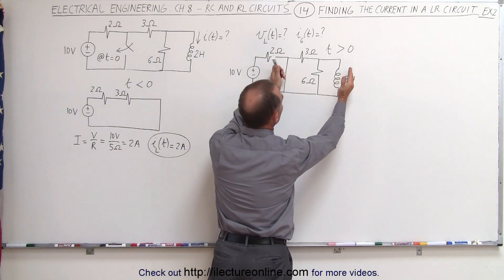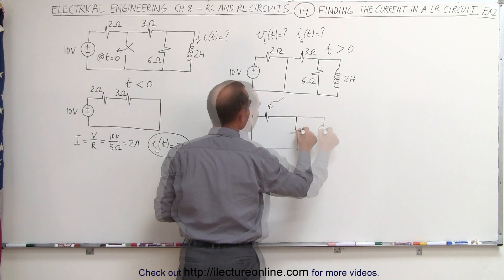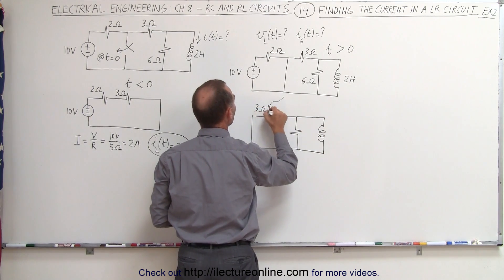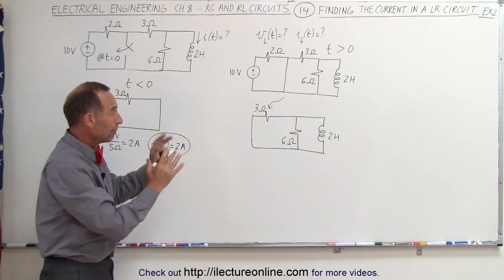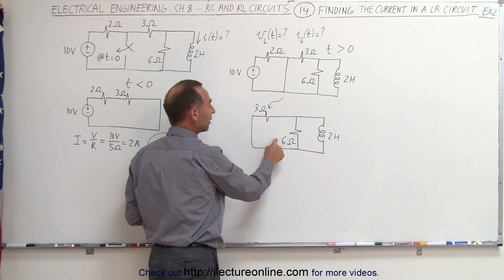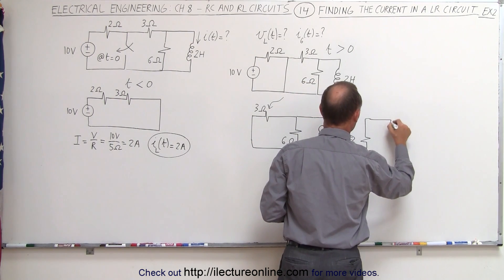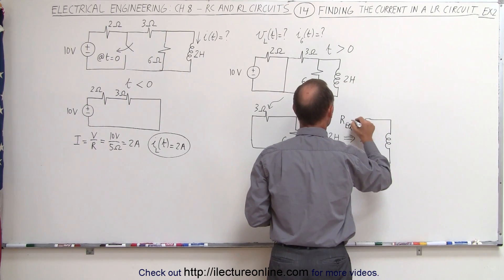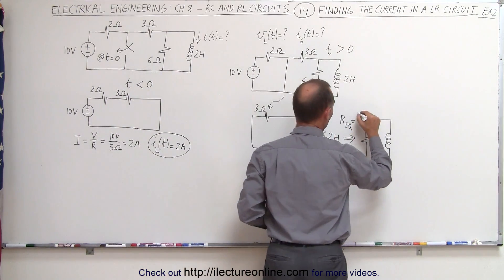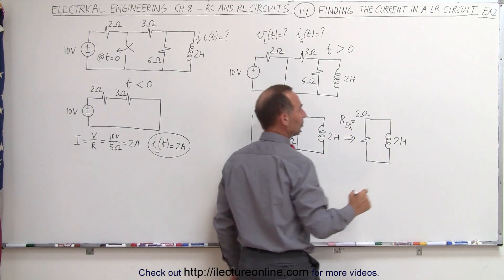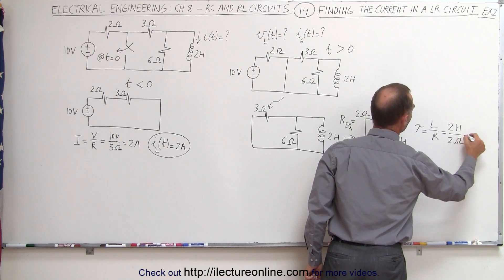Which means that this part of the circuit can now be drawn as an equivalent circuit. The equivalent circuit will now look like this relative to the inductor: we have a 3 ohm, a 6 ohm, and a 2 henry inductor. Notice that if we want to combine those two resistors, they are in parallel relative to this inductor, so this can be drawn as a single resistor with a single inductor. The equivalent resistance would be the product over the sum: 18 divided by 9, which means 2 ohms is the equivalent resistance. With 2 henrys of inductance, the time constant, being L over R, equals 2 henrys divided by 2 ohms, equals 1 second.